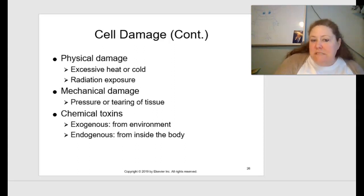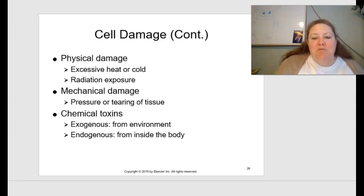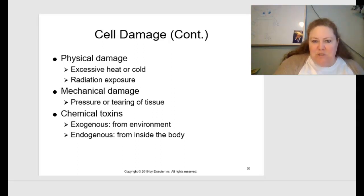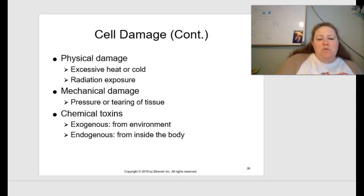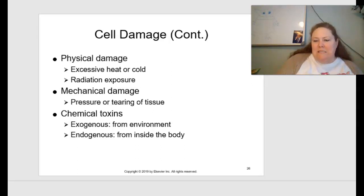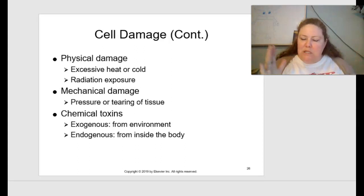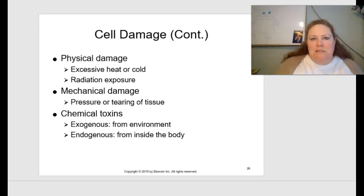Continuing with cell damage: physical damage includes excessive heat, exposure to cold, or radiation exposure. Mechanical damage involves pressure or tearing of tissues. Chemical toxins can cause damage from exogenous sources — outside or from the environment — or endogenous sources — inside the body. Throughout this course, I focus on root words: 'exo' means outside (like exoskeleton — the outside skeleton on bugs), and 'endo' means inside. If you get lost in a word, look for root words.